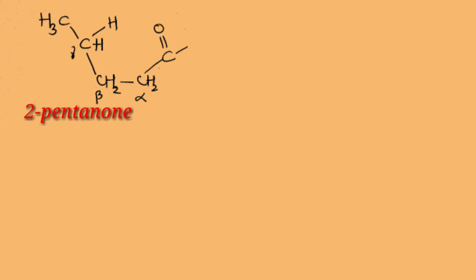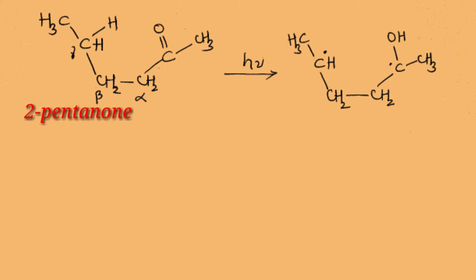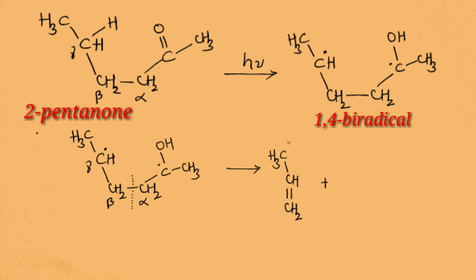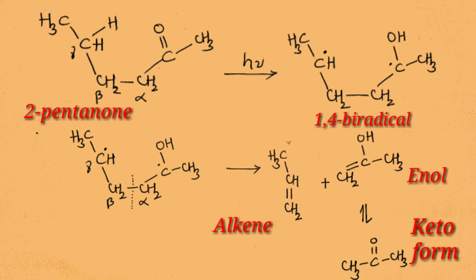When 2-pentanone undergoes a Norrish type 2 reaction, transfer of the gamma hydrogen to the oxygen atom of the carbonyl group takes place, forming a 1,4-biradical. Then cleavage of the alpha-beta carbon-carbon bond takes place to form an alkene and enol, which on further tautomerism gives the keto form.